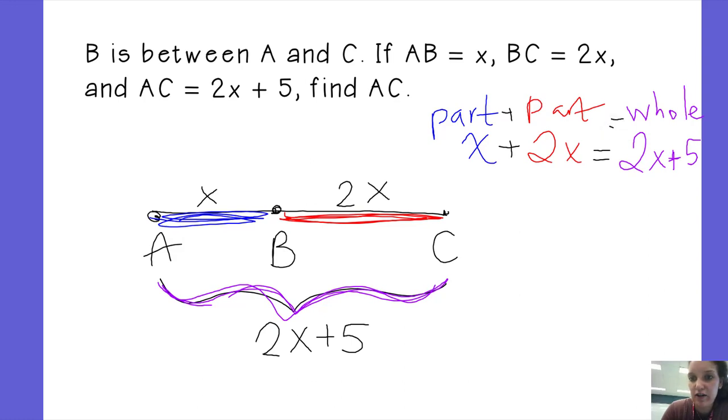So I can combine like terms now. X plus 2X is 3X equals 2X plus 5. And so I can subtract 2X from both sides. 3X minus 2X is 1X. And those cancel out, and so I'm left with just 5. So now X is 5.